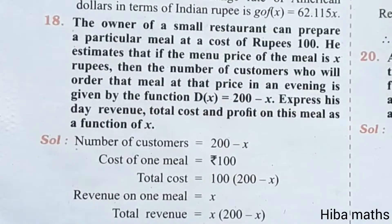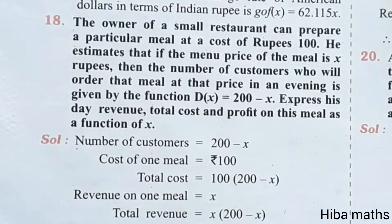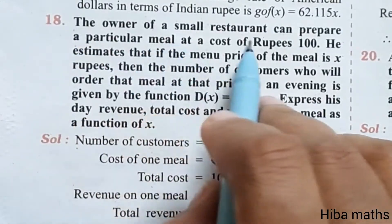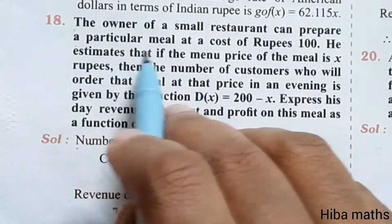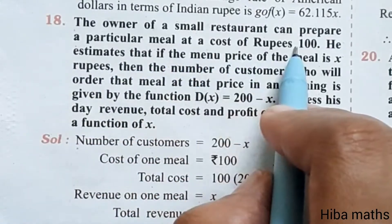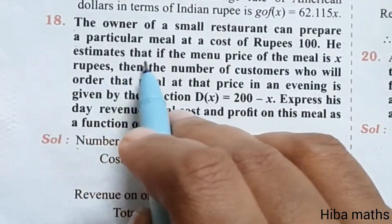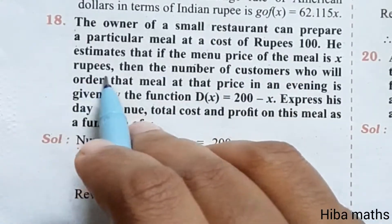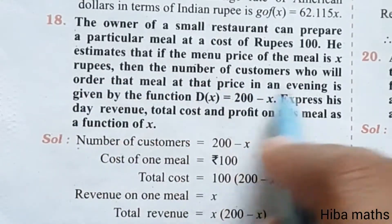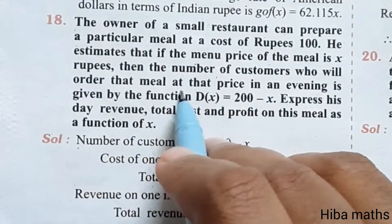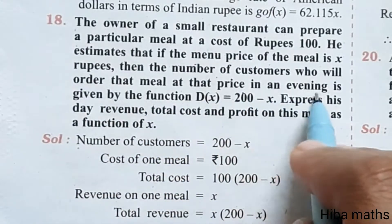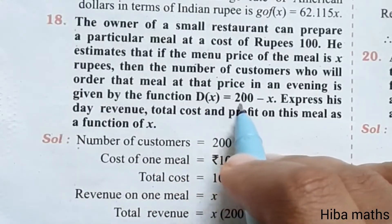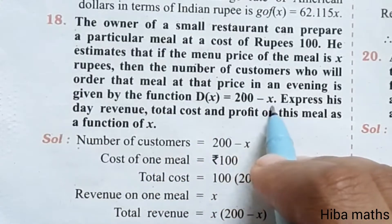Hello students, welcome to Hibamax 11th Standard Max Chapter 1, Exercise 1.3, 18th Question. The owner of a small restaurant can prepare a particular meal at a cost of rupees 100. He estimated that if the menu price of the meal is x rupees, then the number of customers who will order that meal in an evening is given by the function d of x is equal to 200 minus x.